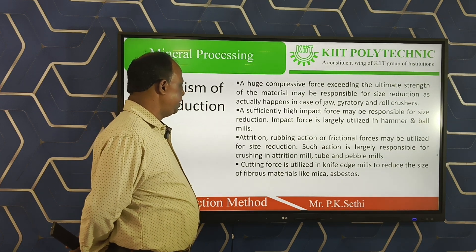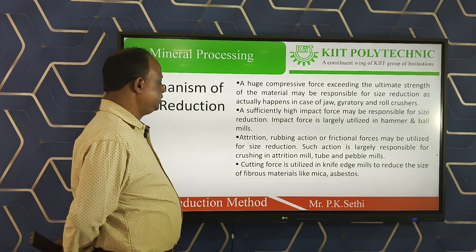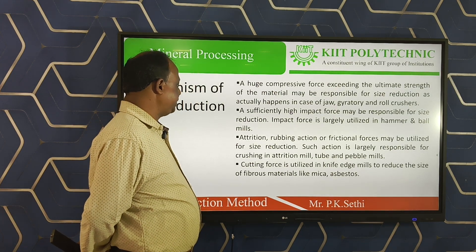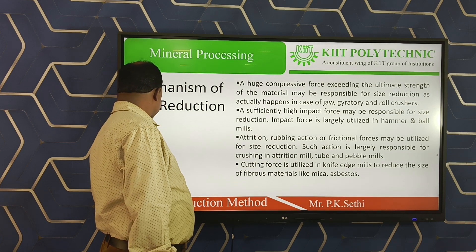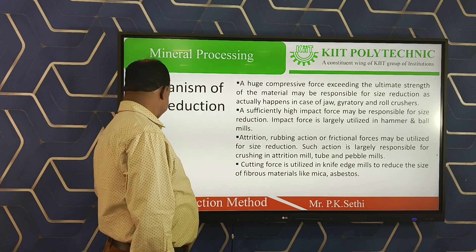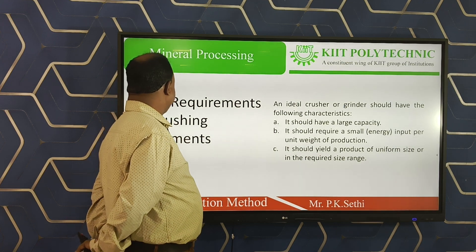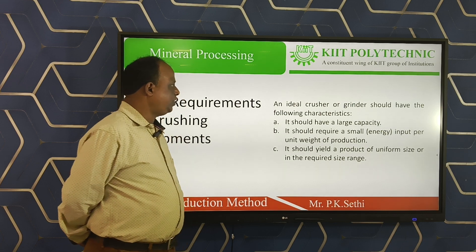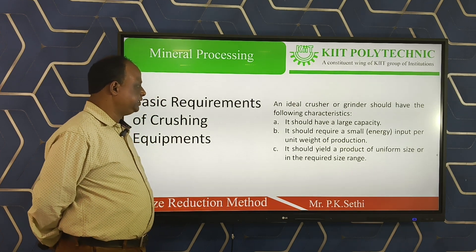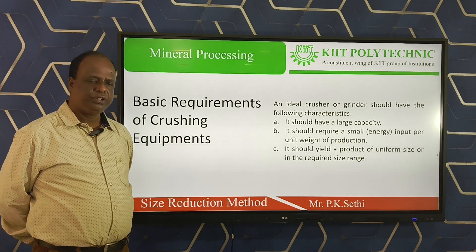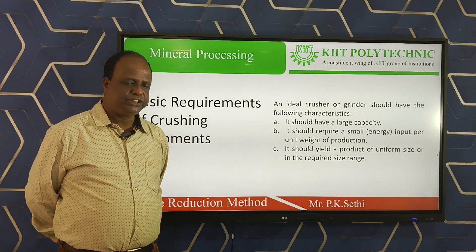The frictional force or rubbing action is used in the case of tube mill, pebble mill, and rod mill. The cutting forces are used in the case of edge mills to reduce the size of fibrous materials like mica and asbestos. Next, what are the basic requirements of crushing equipment? An ideal crusher or grinder should have the following characteristics: large capacity, it consumes less amount of energy, and it produces a uniform size product.